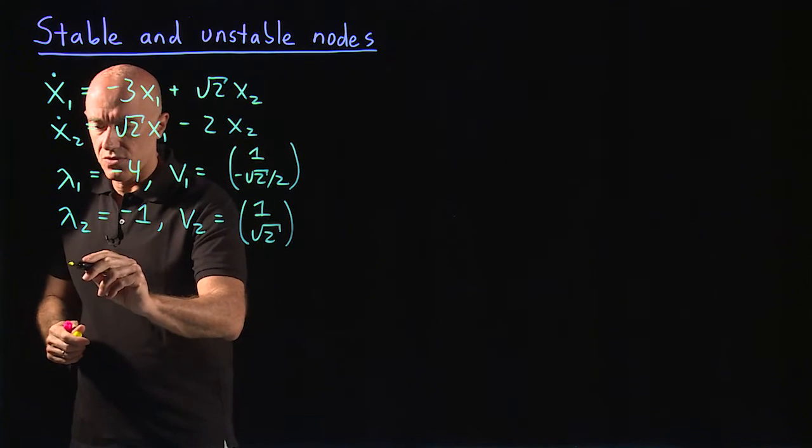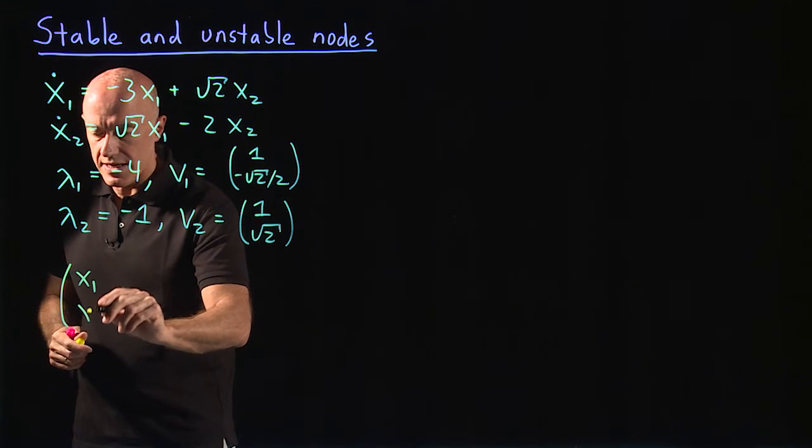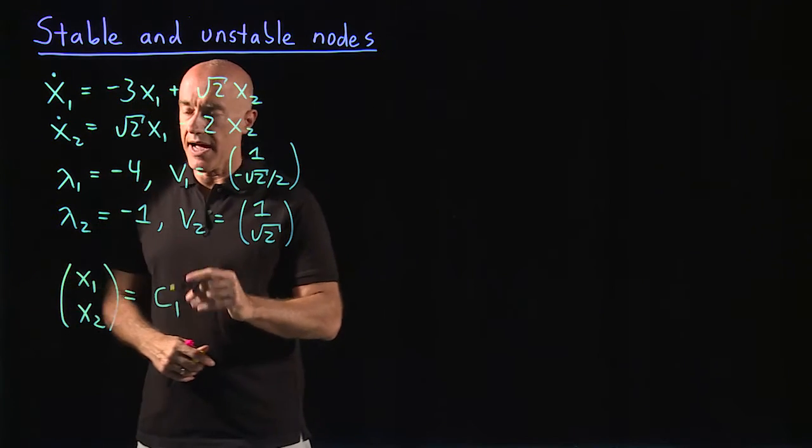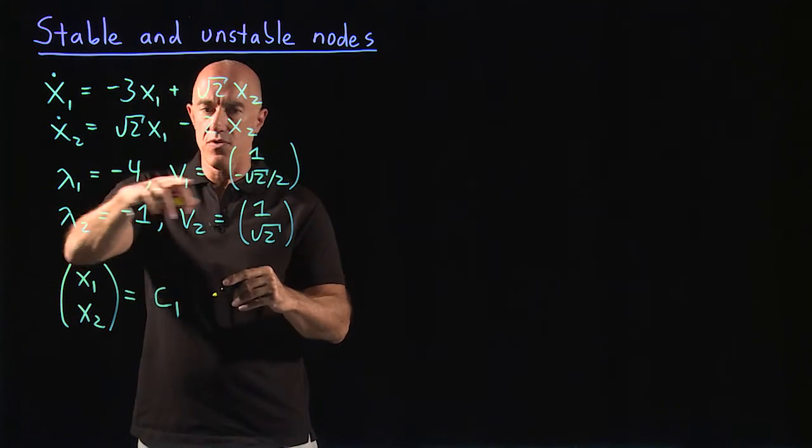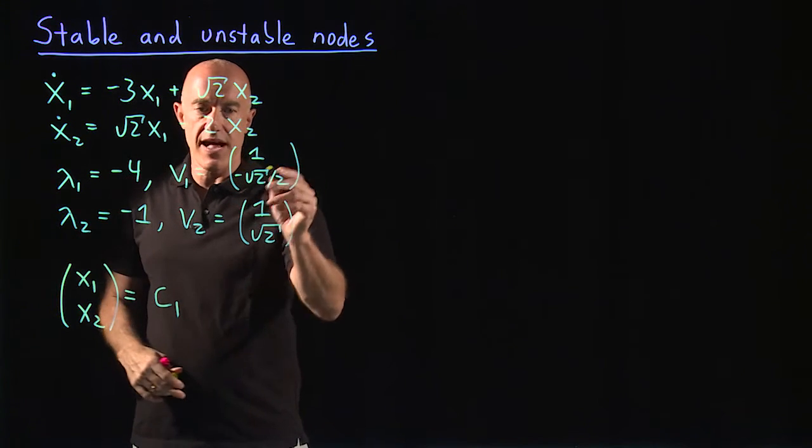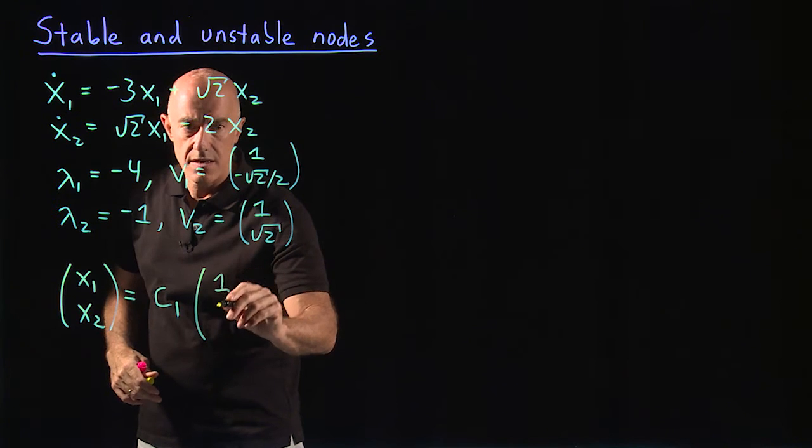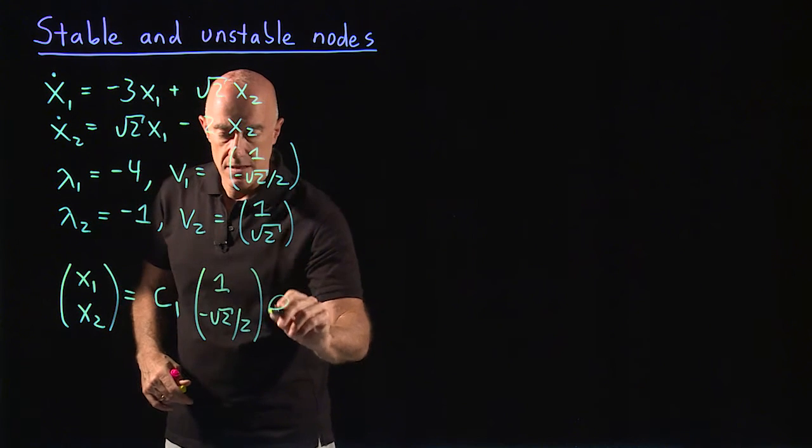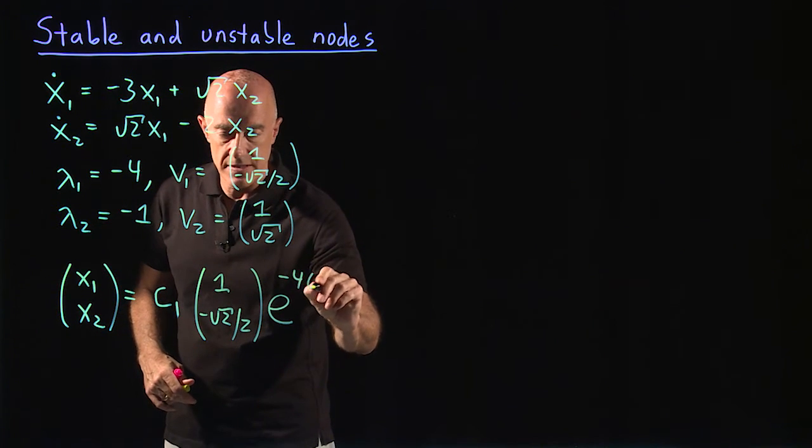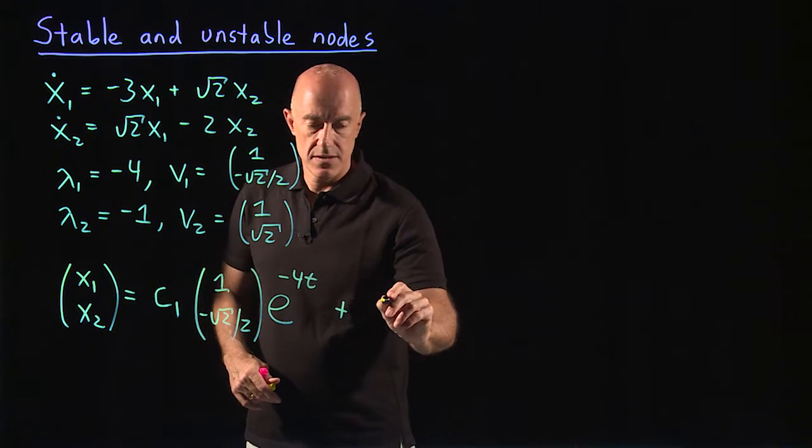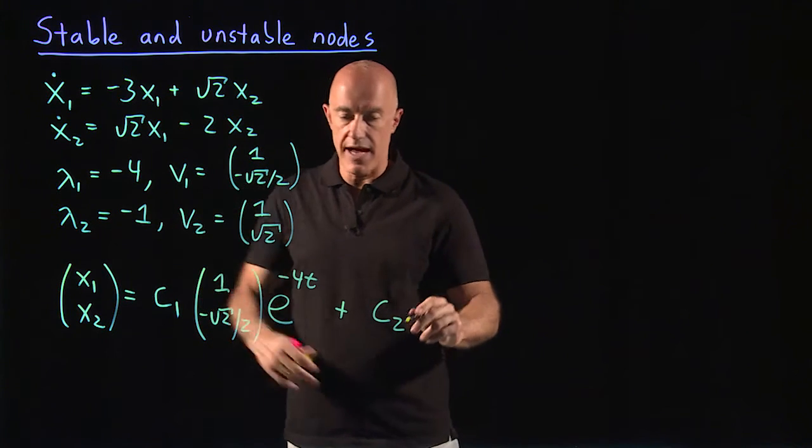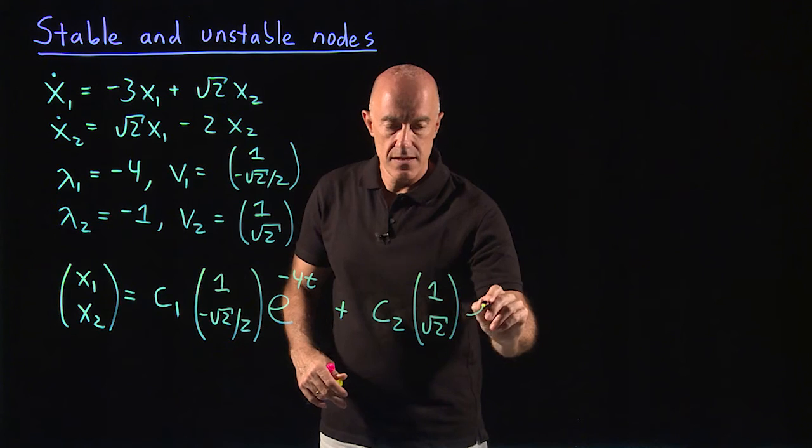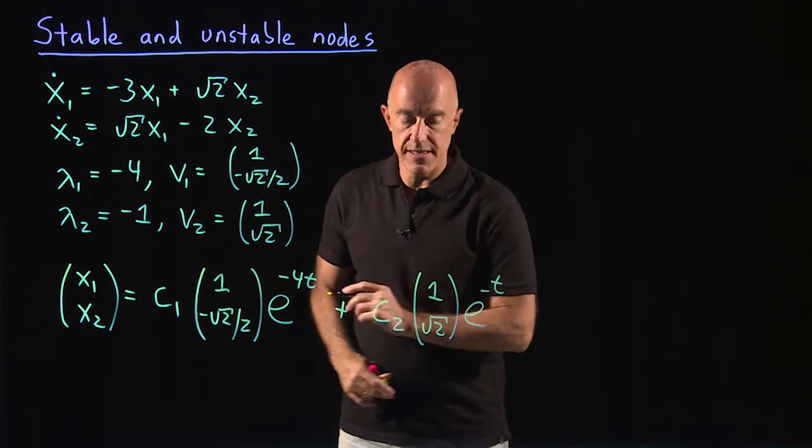So we can write the solution in vector form as x1, x2 equals a constant times our vector for the first eigenvalue, which would be 1 minus root 2 over 2 times e to the minus 4t plus c2 times the second eigenvector 1 root 2 times e to the minus t.